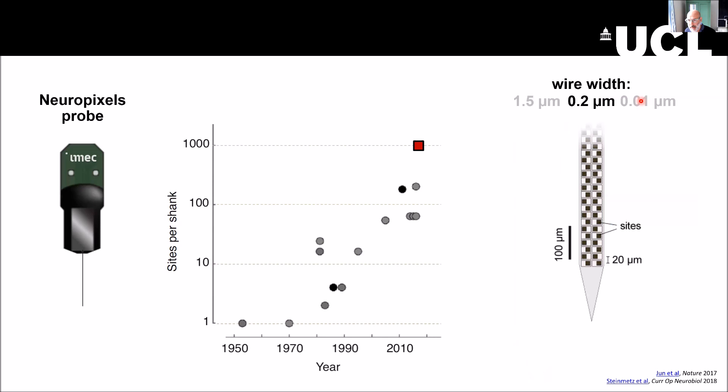So here's the Neuropixels probe. It's got about a thousand channel sites, and it appeared in 2017. The sites are spaced by about 20 microns and they have this geometry here, which is designed to try to optimize the number of neurons that are recorded. Clearly it's probably not going to be the last word in this business. Electronics can go way thinner and more compact.